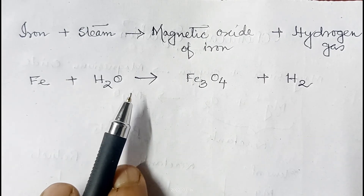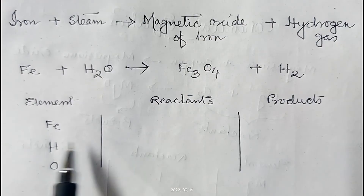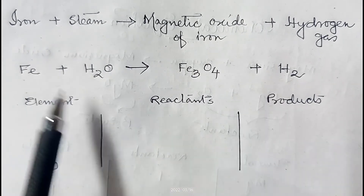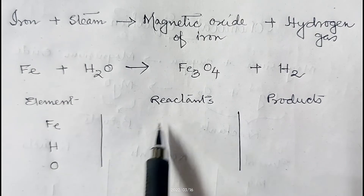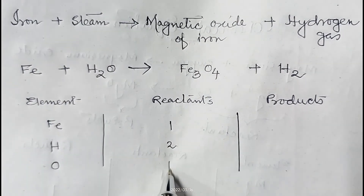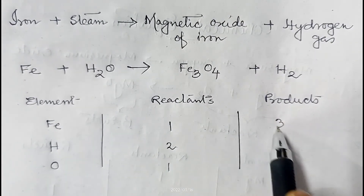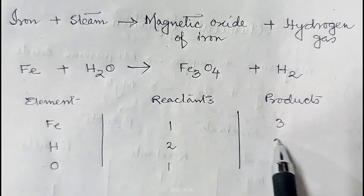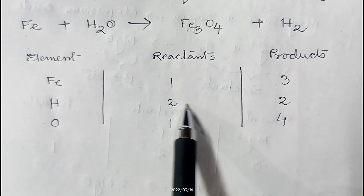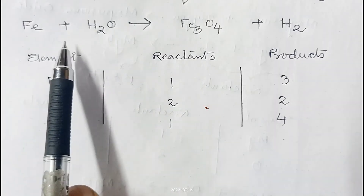Let's count the atoms on both sides. On the reactant side: iron = 1, hydrogen = 2, oxygen = 1. On the product side: iron = 3, hydrogen = 2, oxygen = 4. So iron, hydrogen, and oxygen are all unequal. We need to decide where to start balancing.